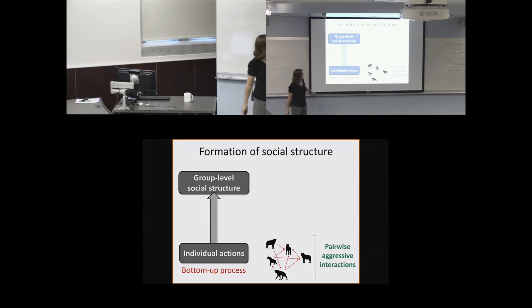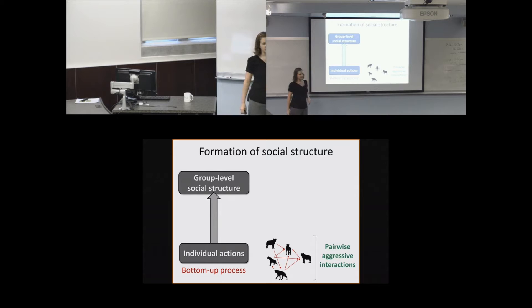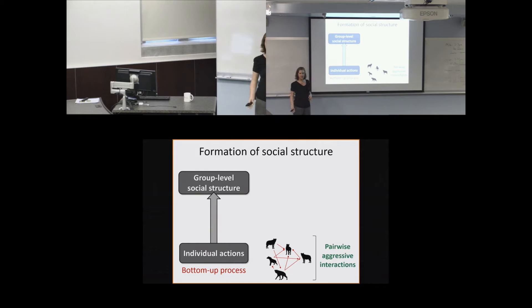The formation of social structure is generally thought to be a bottom-up process, where individual actions contribute to the emergence of group-level social structure. If we take a dominance hierarchy and aggression example, each individual becomes a node within an aggression network. The arrows here indicate the amount and direction of aggression that an aggressor is directing towards a particular target within the group.